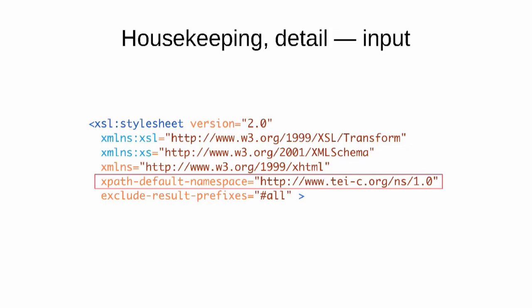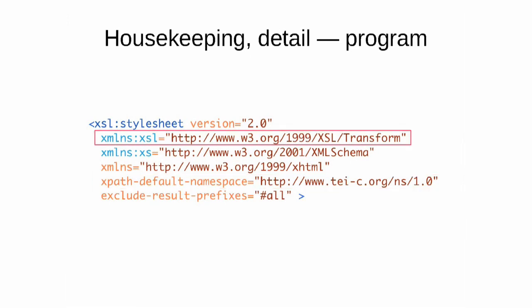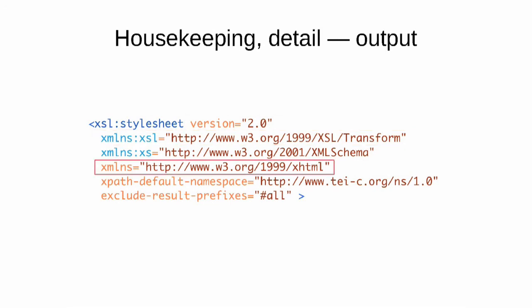The top part of the XSL stylesheet that I skipped over before and called housekeeping is how we tell the XSLT processor which is the input, which is the output, and which is the stuff for it. Here is that housekeeping section reproduced. The highlighted portion in the red box is the attribute that tells the processor: when you see an element name in a match or select attribute, it's from the TEI namespace. This bit tells the processor things prefixed with xsl: are in the XSLT namespace, and this bit tells the processor those elements without a prefix come from the XHTML namespace. These namespaces are somewhat long and complex strings, and we recommend always copying and pasting them — never typing them by hand. Making a single mistake in that namespace can ruin your entire program. Ask me how I know.